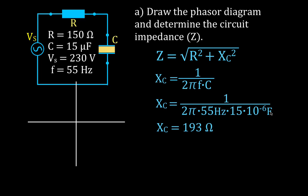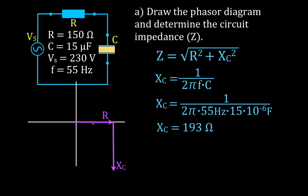That gives us a capacitive reactance of 193 ohms. Now that we know both the resistance and the capacitive reactance, we can draw the phasor diagram. The vector representing the resistance is drawn along the positive x-axis, and the vector representing the capacitive reactance is drawn along the negative y-axis. We add these two vectors using the head-to-tail method, and their sum is represented by the vector Z — the impedance.